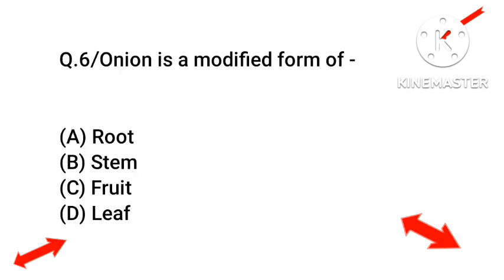Next question: onion is a modified form of what? The options are option A root, option B stem, option C food, option D leaf. The right answer will be stem — onion is a modified form of stem, option number B.